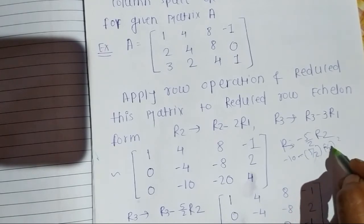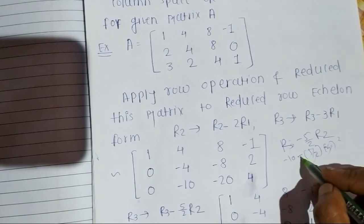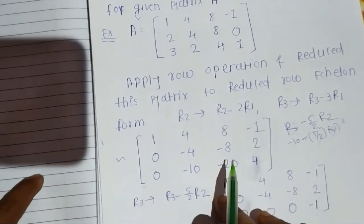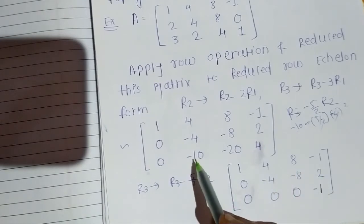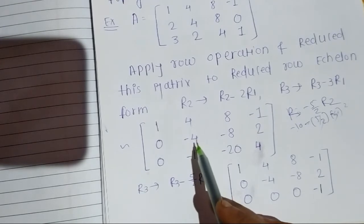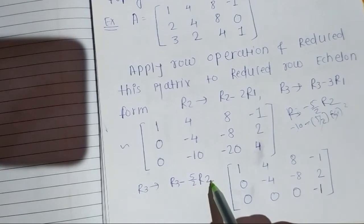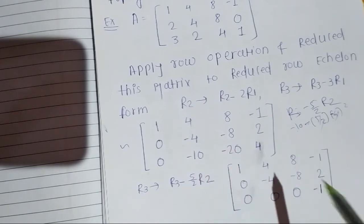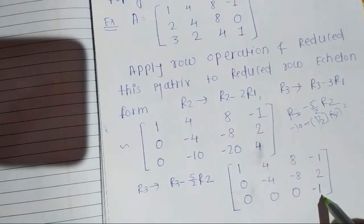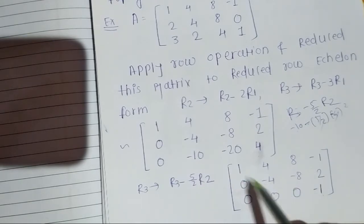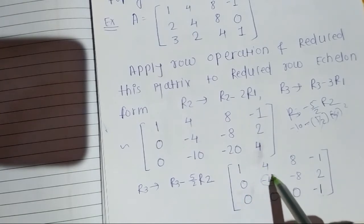Continuing, we perform R3 → R3 minus (5/2)×R2. Alternatively, you can do R3 minus 10×R2 — both are correct. After this operation we get: 20 minus 20 = 0, then 4 minus (5/2) times gives -1. This gets us to Row Echelon Form, but we need Reduced Row Echelon Form, where elements above each pivot are also zero.